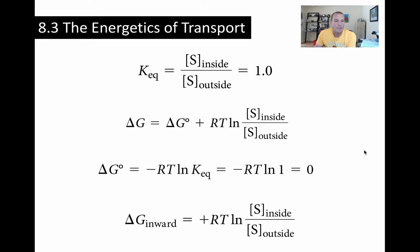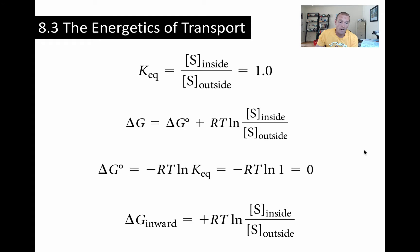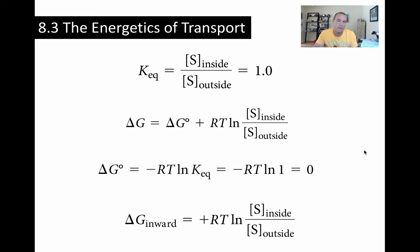At equilibrium, the equilibrium constant equals one because any number over itself is one — the solute is at the same concentration inside as outside. Rather than thinking about substrate concentrations for reactions, we can substitute in the solute concentrations inside and outside the cell. This is for a solute moving outside to in. If you want to think about it in the other direction, just reverse the two: outside to in, you put inside over outside; inside to out, you put outside over inside.